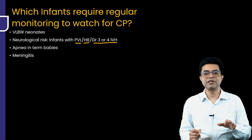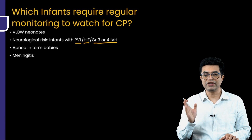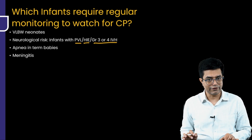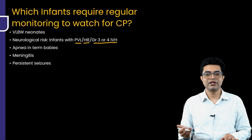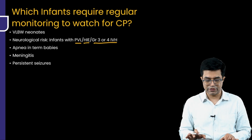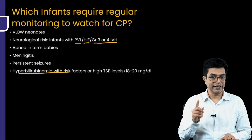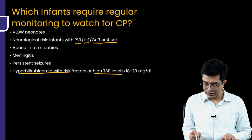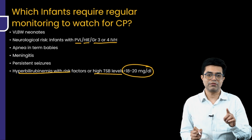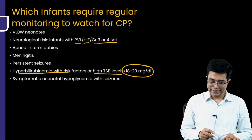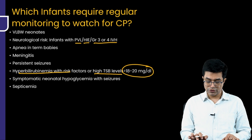Meningitis, particularly if it has occurred in the first 3 to 6 months, requires follow-up until at least 2 to 3 years of age for any developing cerebral palsy. Persistent seizures, provided benign neonatal epilepsies are ruled out, also require follow-up. Hyperbilirubinemia with risk factors — particularly in an Indian setting or with a high TSB level more than 18 to 20 mg per litre — warrants watching for extrapyramidal cerebral palsy. Symptomatic neonatal hypoglycemia with seizures and septicemia also need to be watched out for.